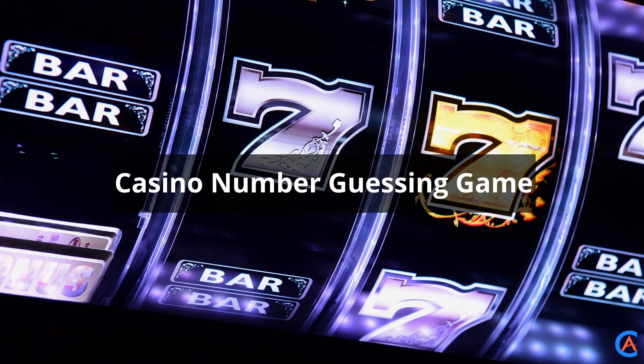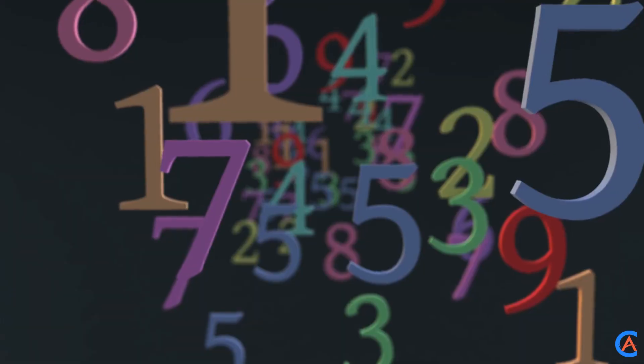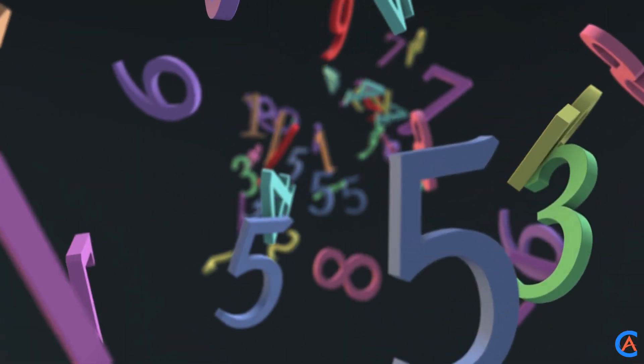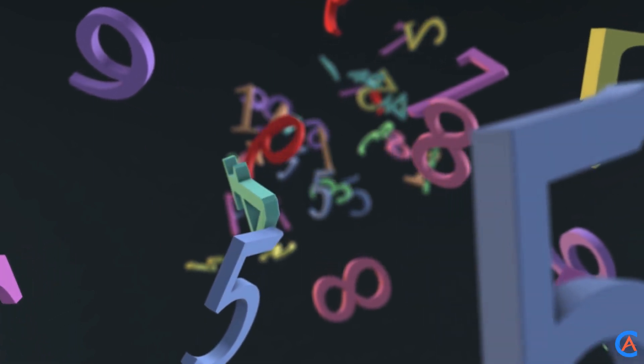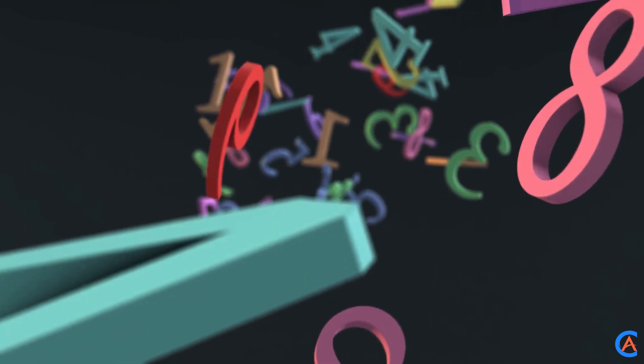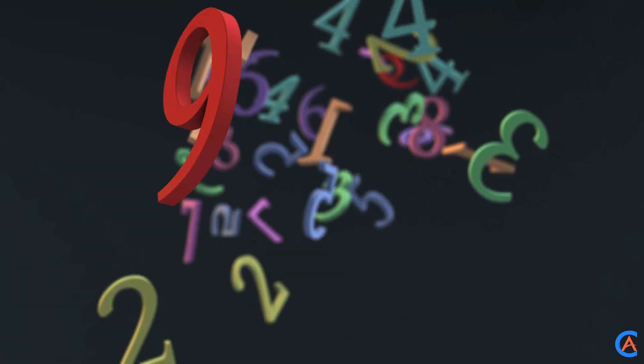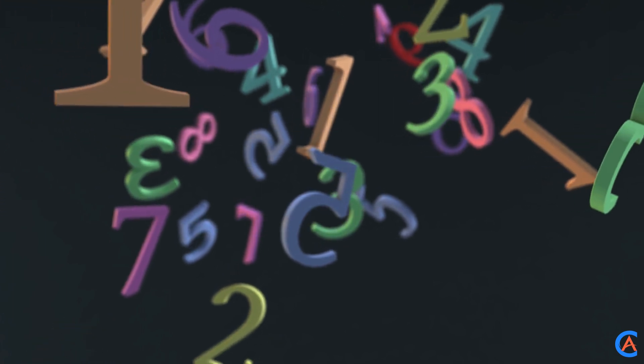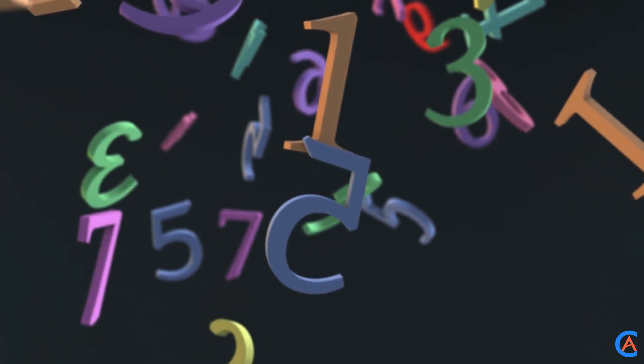Number 5. Casino Number Guessing Game. This is an exciting project where we will learn about the library used for random numbers. The program asks for a betting amount, and then asks the user to guess a number on rolling. If the random number generated matches the user input, he wins, else money is deducted. The user can keep playing until he loses all the amount he put in initially.